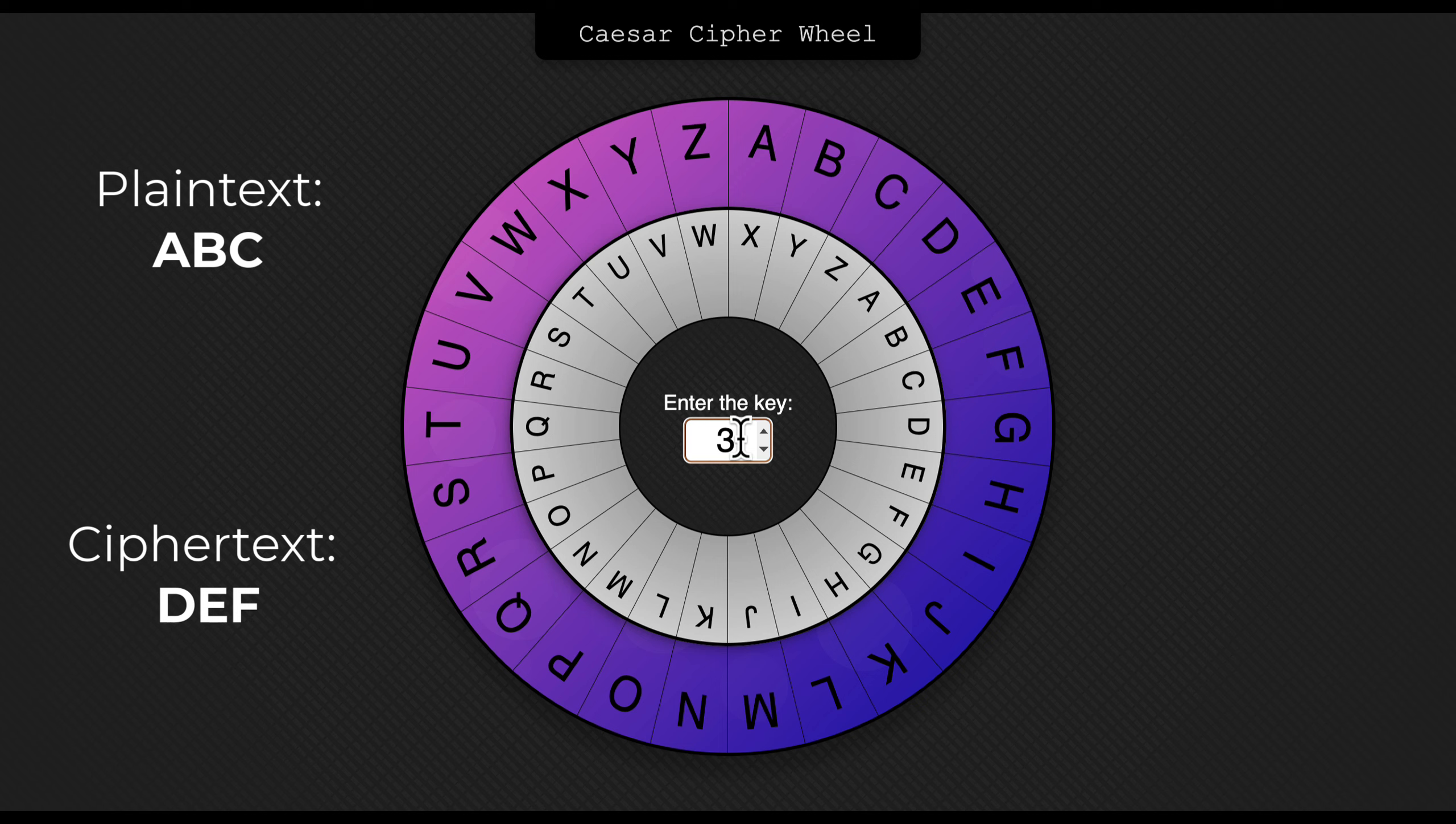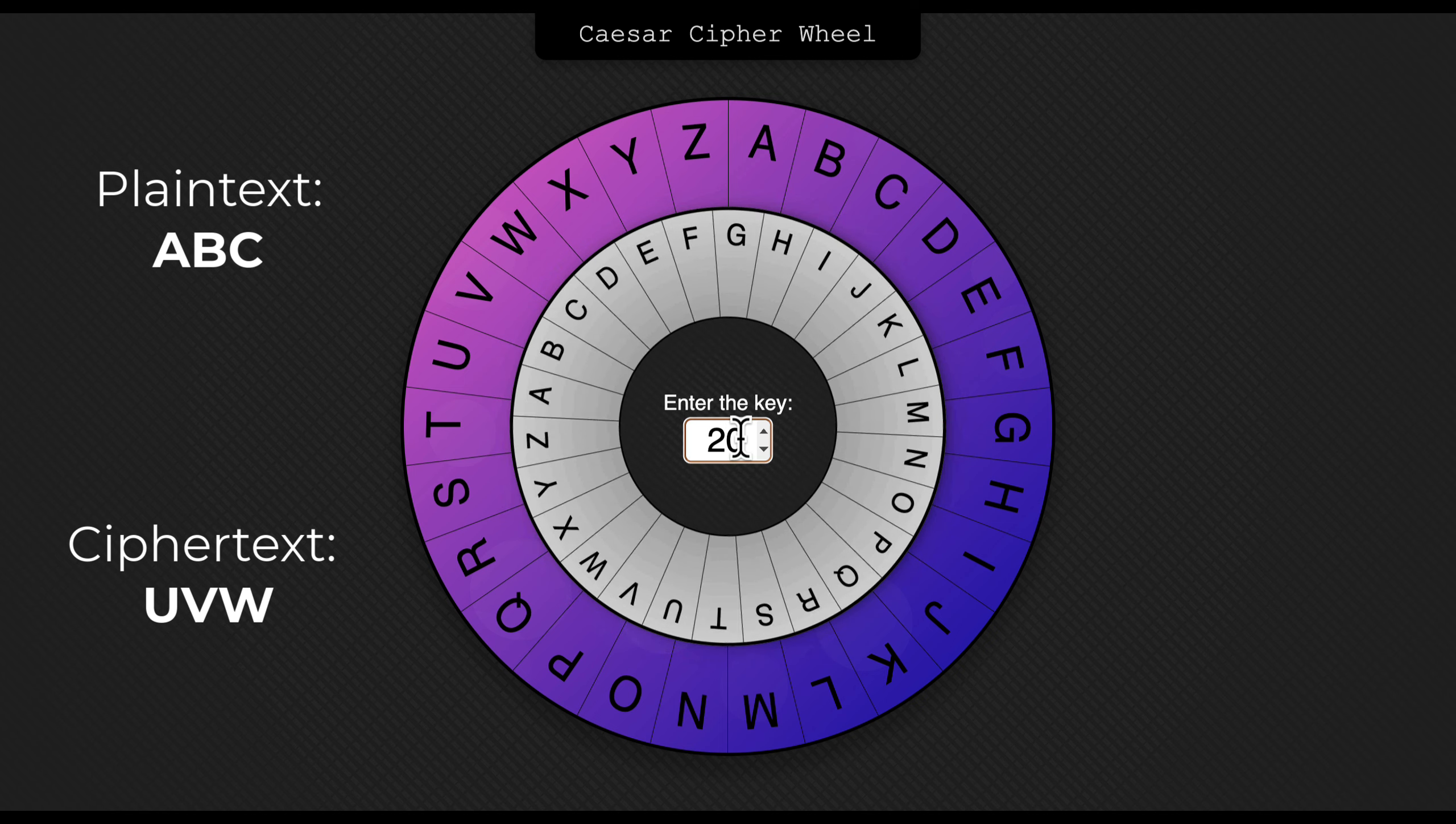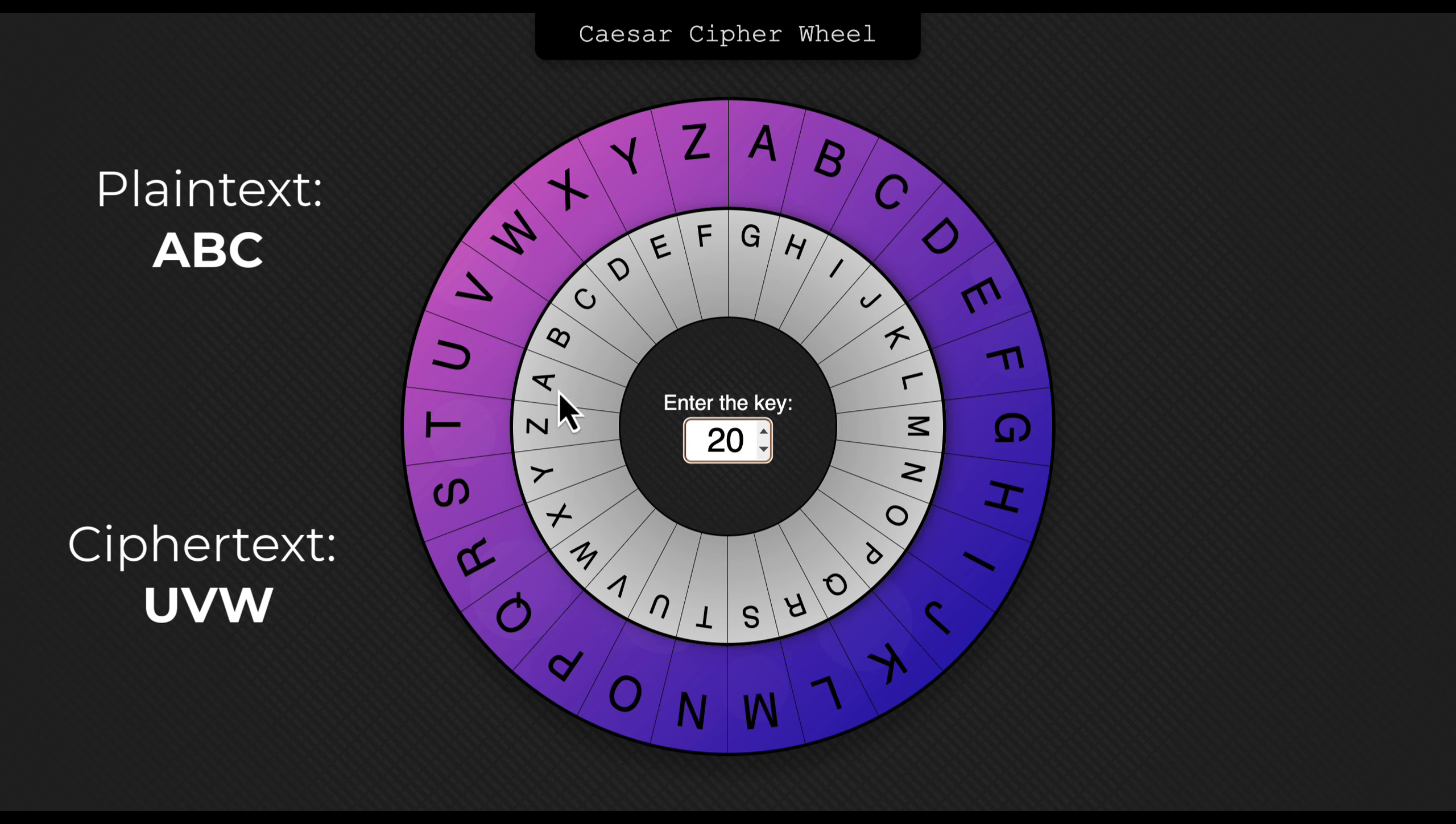Let's try a different key. Let's try 20. Now we see that all As turn into Us, and all Bs turn into Vs. Now we can use the key 26. That just brings us back to the beginning. As are now As again, and Bs are now Bs again.